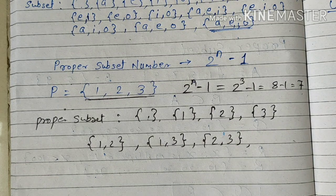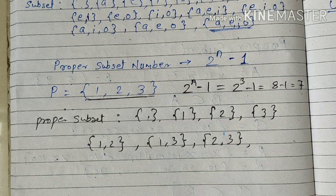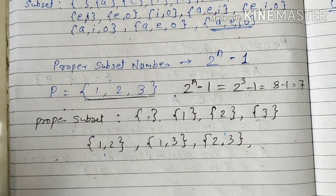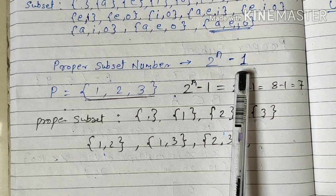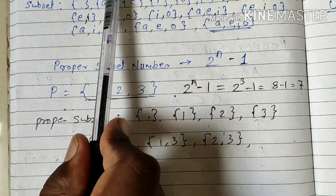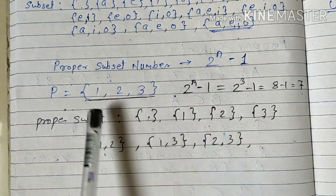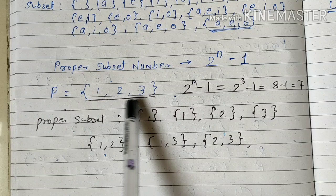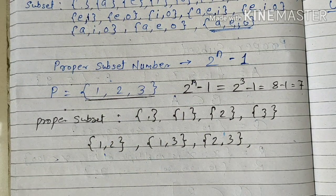These are the proper subsets of P set. Understood the difference between the subsets and the proper subsets? Only the difference of one is there. We will not include the itself set. Itself is the subset, but in the proper subset we will not include the equal set as a subset of it.